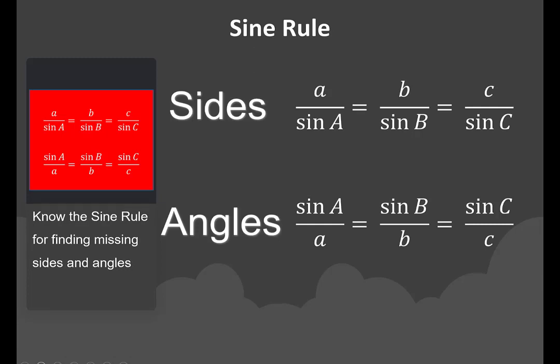So what is the sine rule? The sine rule is a over sine A equals b over sine B equals c over sine C. The lowercase letters represent the sides of a triangle and the uppercase letters represent the angles. We use the sine rule to find missing sides and angles in a non-right-angle triangle. Previously, for a right-angle triangle we used either Pythagoras to find a missing side or trig ratios to find a missing side or angles.